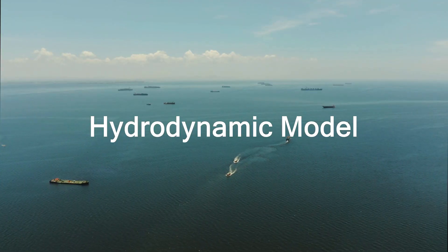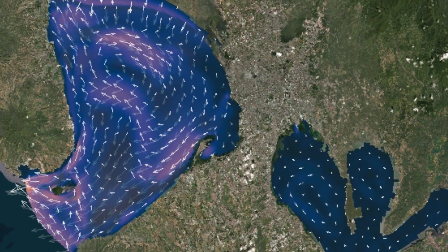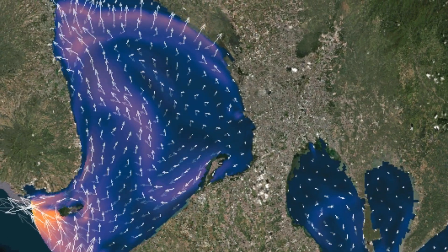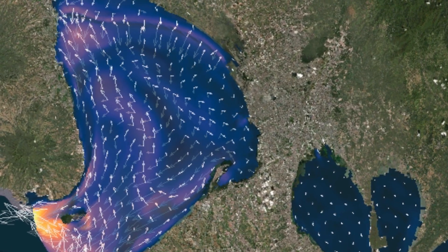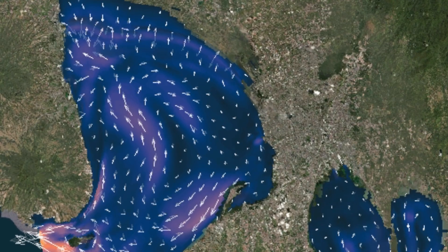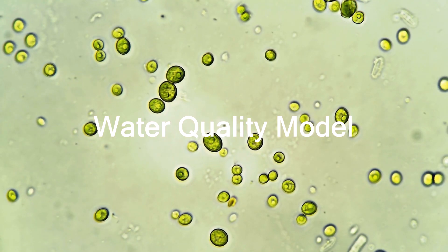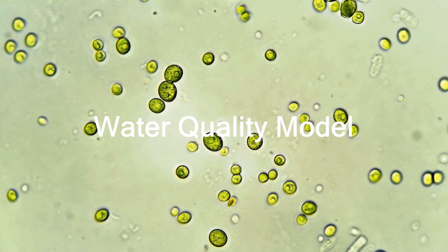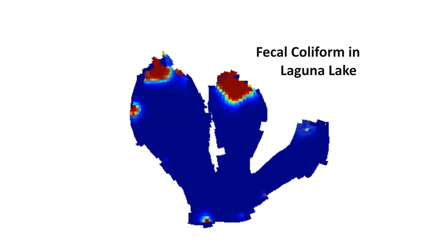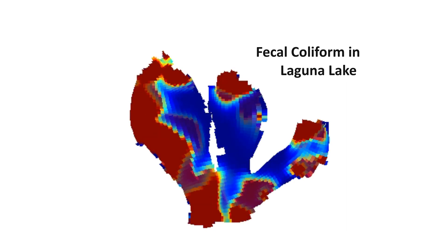Second, a hydrodynamic model, which simulates how the water moves in the Bay, Laguna Lake, and Pasig River by considering forces like wind, tides, and river discharges. And finally, a water quality model, which gives us an idea of how nutrients and other biochemical processes move around these waters.